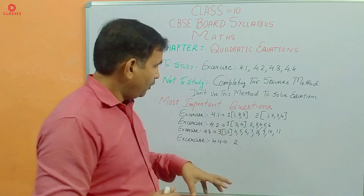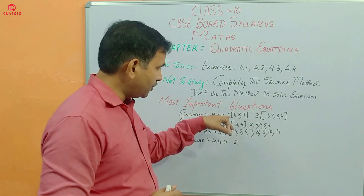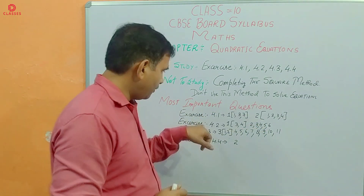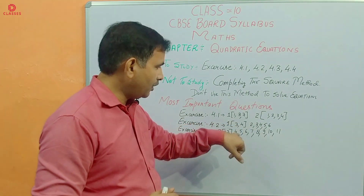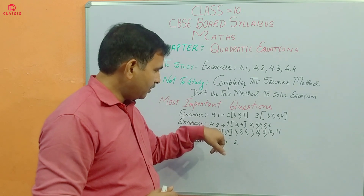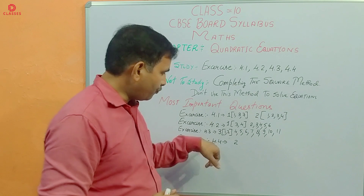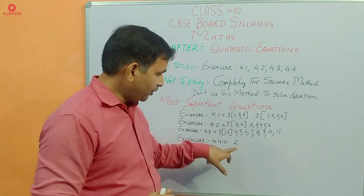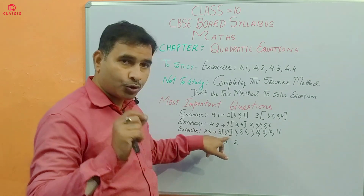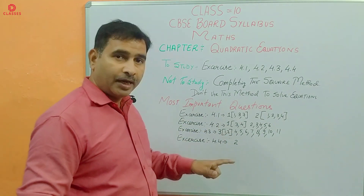The most important questions are: Exercise 4.1 — Section 1, questions 3 and 7, second part, and questions 1, 3, 2, 4, and 4.1 question 1, 3, 4. Second, third, fourth, fifth, sixth parts. Exercise 4.3 — third question, first and second parts, questions 4, 5, 6, 7, 8, 9, 10, 11. Exercise 4.4 — second question, which is the most important and will come as a three-mark question. This is the most important question that will be asked in the board exam for a longer answer.